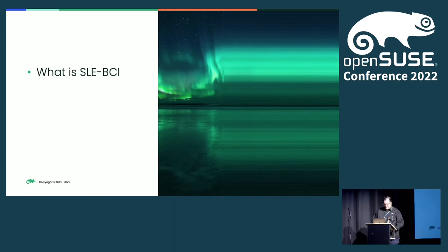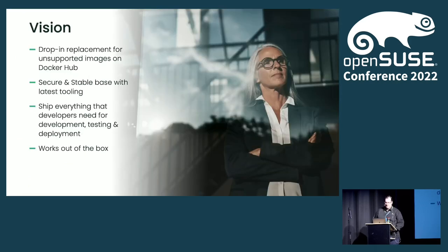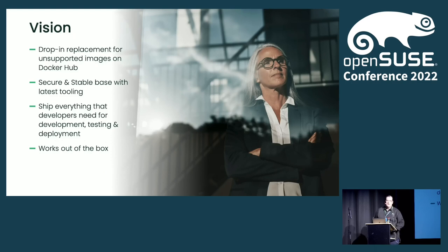Our vision for SLES BCI was to have a drop-in replacement for unsupported images in Docker Hub. For developers, it might be good to have your own project with containers you can pull from Docker Hub, but our customers are looking for containers where they can get a report if they run into issues. SLES BCI covers this — you can pull BCI containers from our registry and use them. They are free to use and freely available as images from Docker Hub, but if you and your company need professional enterprise-grade support, you can get that from us.